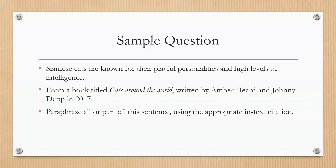Here's a sample question of what you might expect on the final assessment. You get a sentence like: 'Siamese cats are known for their playful personalities and high levels of intelligence.' Then you'd be told that it's from a book titled Cats Around the World, written by Amber Heard and Johnny Depp in 2017. The instruction would be: paraphrase all or part of this sentence using the appropriate in-text citation. So you would write a sentence paraphrasing this information and then make sure that you had the appropriate APA in-text citation, whether you decided to use the author's name in your sentence or not.